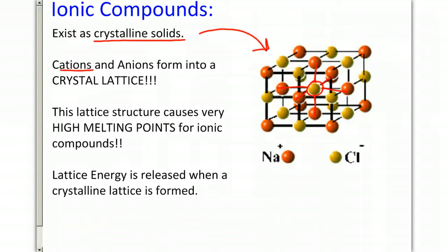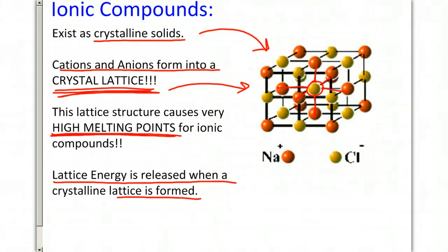The lattice structure, cations and anions form into what's called a crystal lattice. A crystalline solid, this is also known as the crystal lattice. The lattice structure is very strong, and because it's so strong, it causes ionic compounds to have a very high melting point. Lattice energy is also released whenever the crystalline lattice is formed.